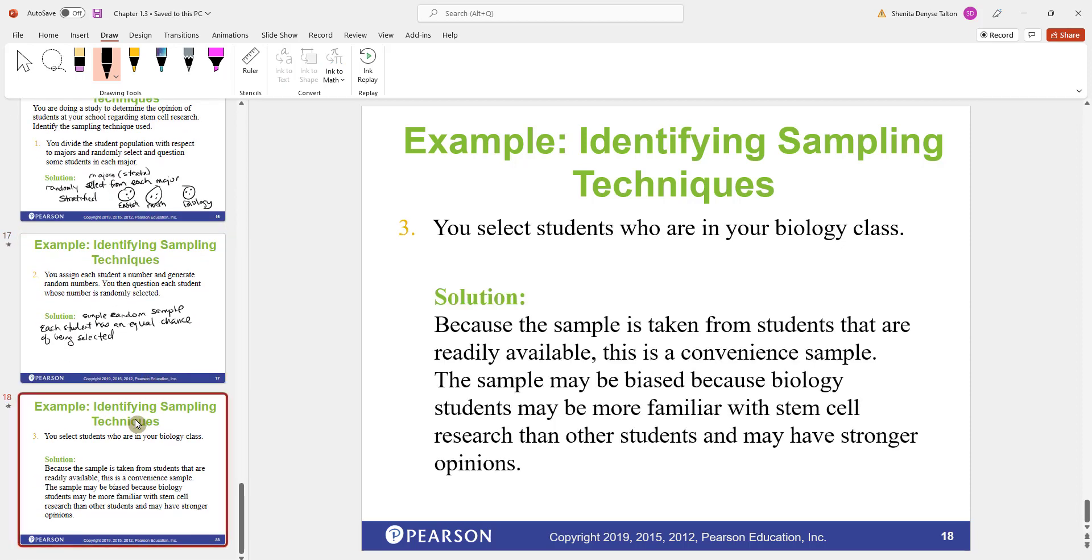This next one is you select students who are in your biology class. Remember, we're still talking about how to get samples for students who, we wanted to get their opinion on stem cell research. This sample is just taken from students in your class. And this is a convenient sample because the students are there and you get access to them. It's just easier for you to interview these people. Now, this sample might be biased because these are biology students. And they may be more familiar with stem cell research than other students are. So they may have stronger opinions. So this would be biased. But this is convenient sampling.